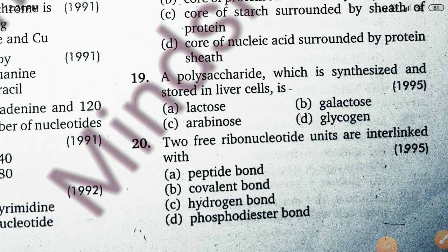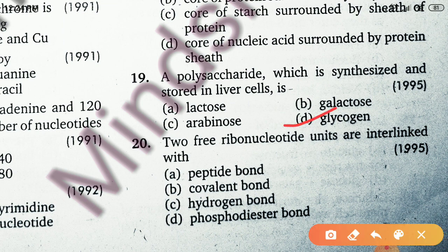The 19th question: which polysaccharide is synthesized and stored in liver cells? The right answer is glycogen. Glycogen is a polysaccharide stored in liver cells. It is a polyglucosan — a digestible, branched-chain homopolysaccharide prepared from glucose through glycogenesis. It is also stored in muscles, and when needed, glycogen is hydrolyzed to glucose through glycogenolysis.